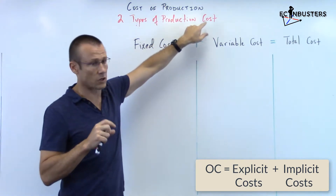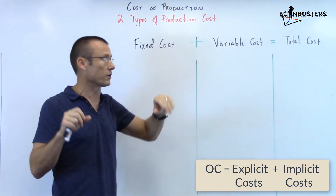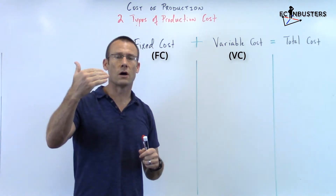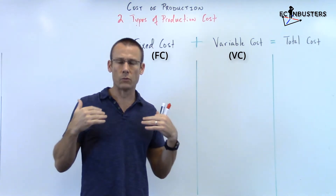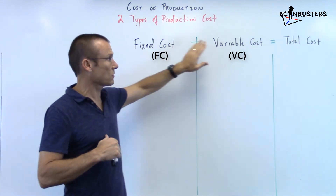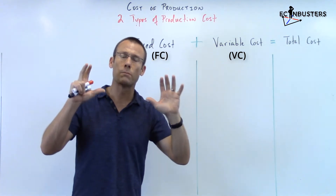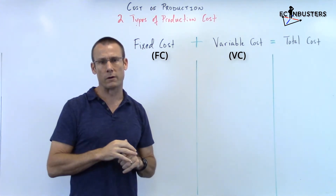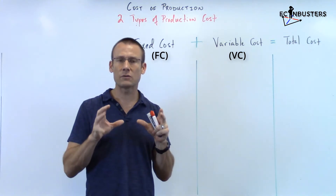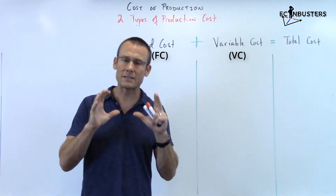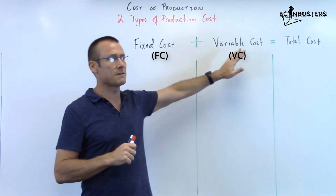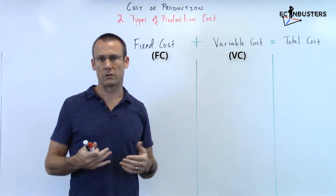We're looking at those implicit costs because they're real costs — there's no cash outlay, but they're real costs. Now we want to understand: what are the two main types of production cost? There's fixed cost and variable cost. At least from an entry-level or principal-level college microeconomics class, these are the two big conceptual buckets of cost. We're not dumbing things down — we're just learning the concepts.